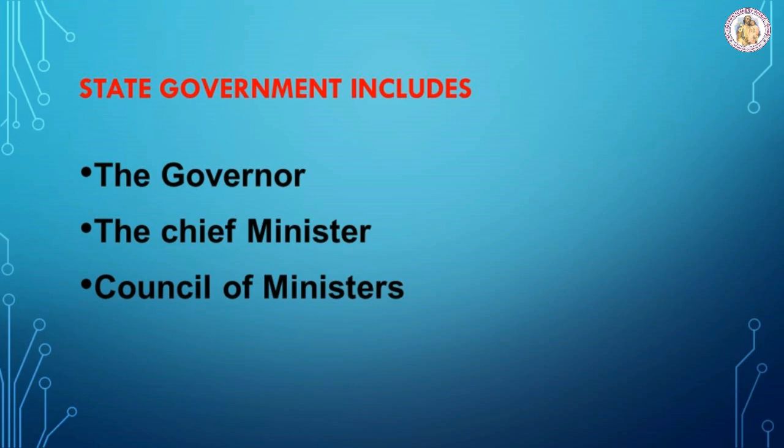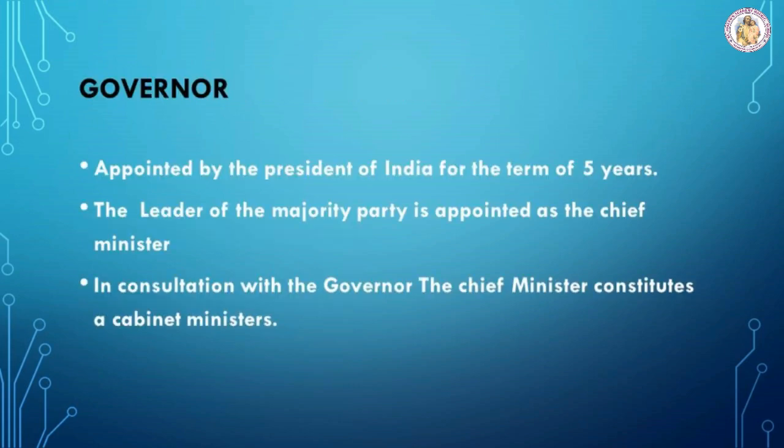The governor is appointed by the president of India for a term of five years. The leader of the majority party is appointed as chief minister by the governor. The chief minister, in consultation with the governor, constitutes a cabinet which includes members of his party as ministers.